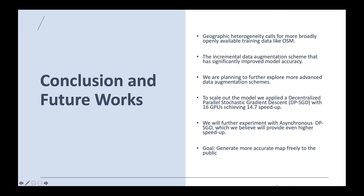To scale up the model, we used decentralized parallel training and achieved nearly linear speedup. We will continue to explore more advanced data augmentation measures to further improve model performance, and an asynchronous training scheme to further speed up training. Our final goal is to generate more accurate maps across the U.S. and make them freely available to the public.